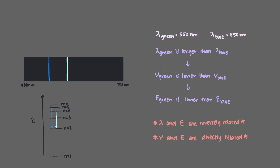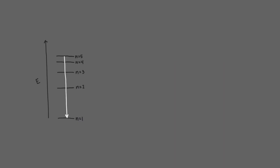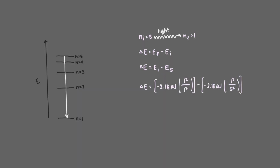Each of these electron wave transformations is represented by a line on the emission spectrum, but there are some transformations not being represented. Why don't we see the n equals 5 to n equals 1 transformation? We start with n equals 5 initially; when the electron emits energy, our new state is n equals 1. The change in energy for this process is calculated, and by plugging in our numbers, we get negative 2.09 atajoules. The negative sign tells us that energy is being emitted.